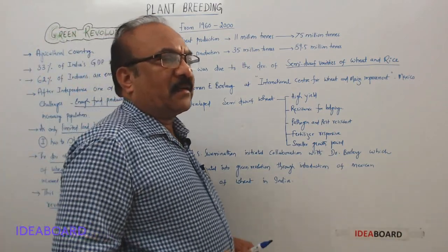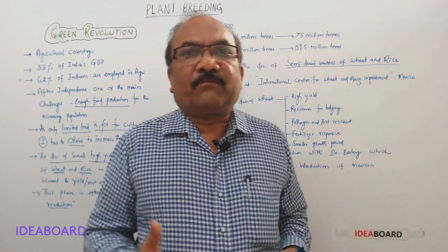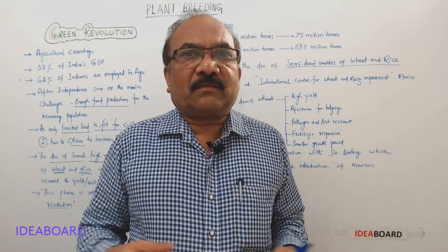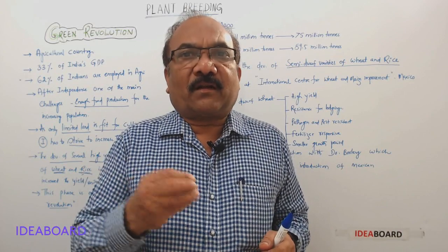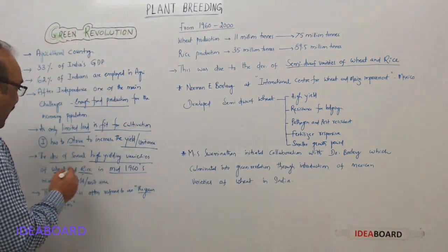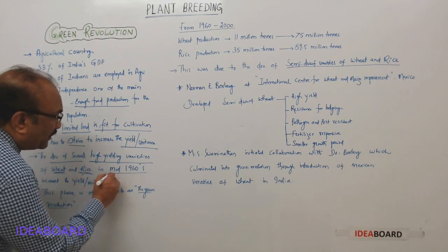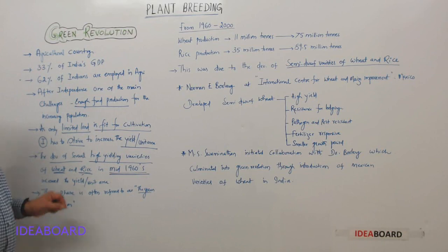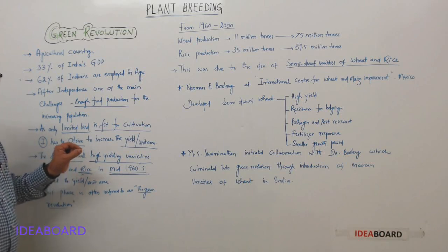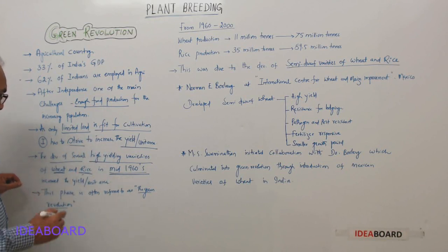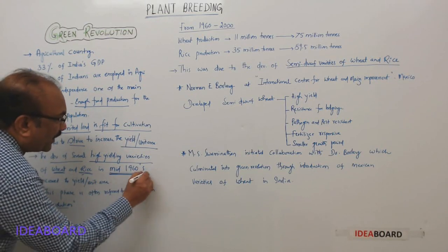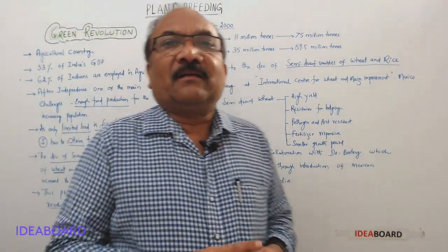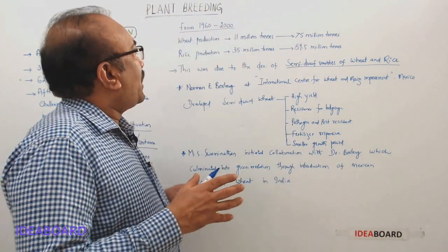High yielding varieties of wheat and rice were developed. We know the staple food in India is rice, and especially in North India they prefer wheat. So wheat and rice are the major food crops in India. This development of high yielding varieties of wheat and rice took place in the mid-1960s, and this phase is often referred to as the Green Revolution.